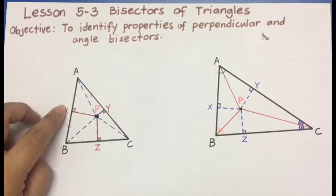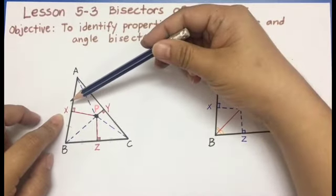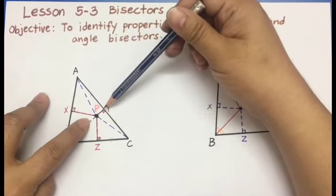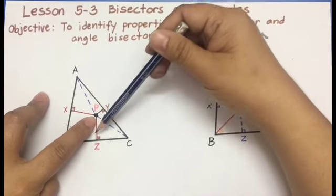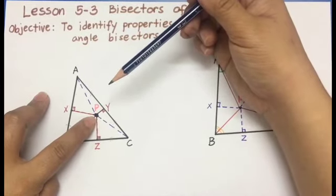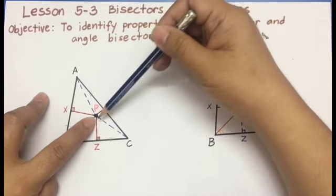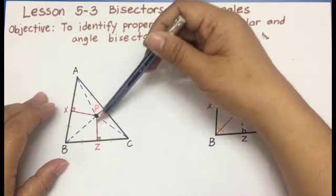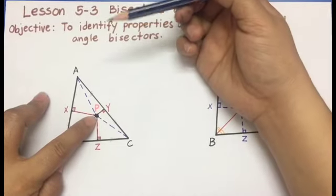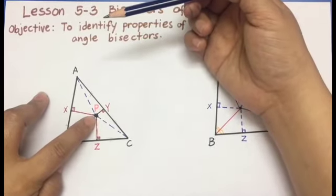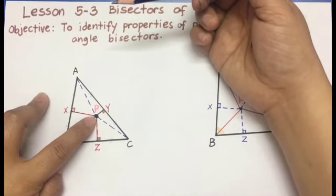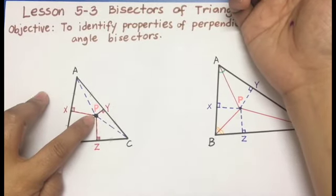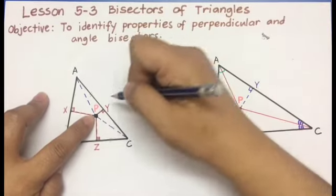Look at these three perpendicular bisectors. Lines X, Y, and Z meet at a common point, so these three lines are concurrent to each other. Concurrent means three or more lines that meet at a common point. So lines X, Y, and Z are concurrent and they meet at point P. This point where the three perpendicular bisectors meet is called the point of concurrency, denoted by the letter P, and it is called the circumcenter of the triangle.